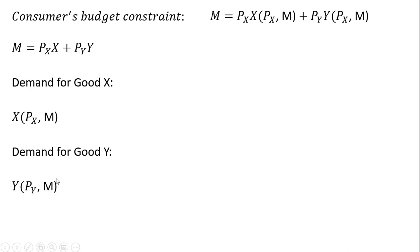So what I'm going to do is substitute these ordinary demands into our consumer's budget constraint. So for X, I just have the ordinary demand for good X as a function of its price and money income, and I do the same thing for good Y.